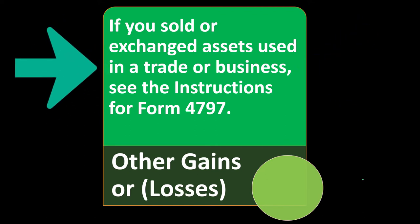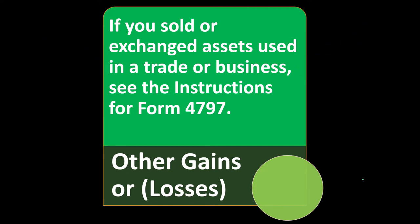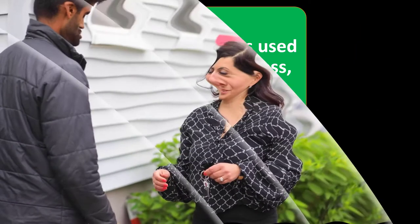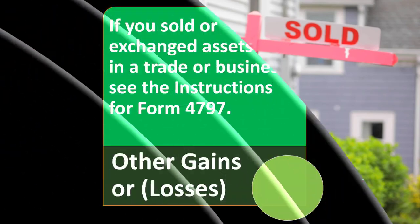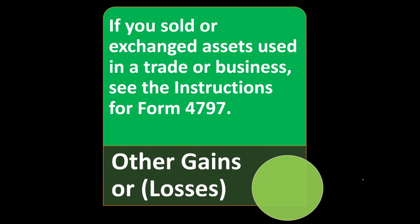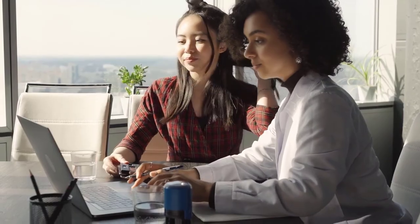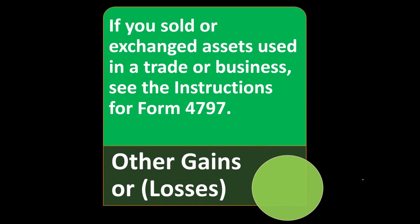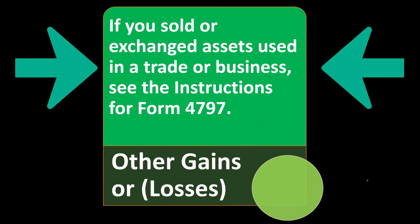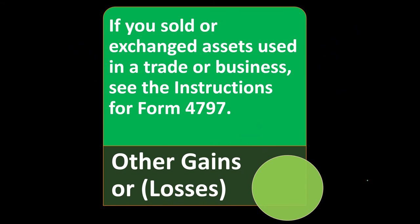Other Gains or Losses: if you sold or exchanged assets used in a trade or business, see the instructions for Form 4797. This is another business-related item where sold assets must be reported on Form 4797. We'll take a quick look at that, but we'll dive more into business information for a sole proprietorship in future presentations.